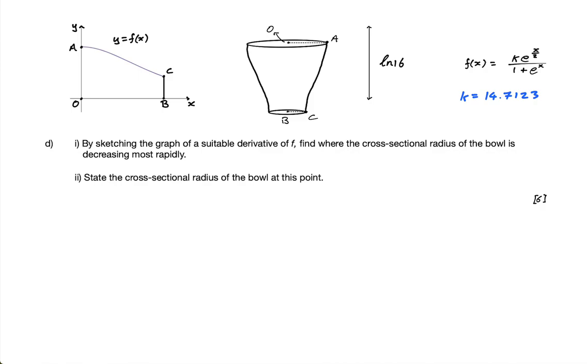Hi guys, okay, question D. It says, by sketching a suitable derivative of f, find where the cross-sectional radius of the bowl is decreasing most rapidly.